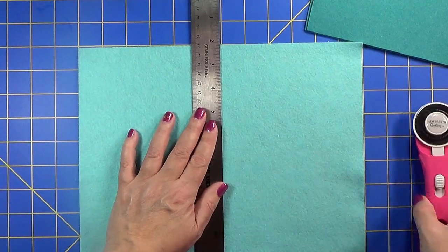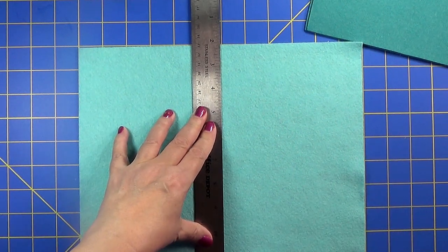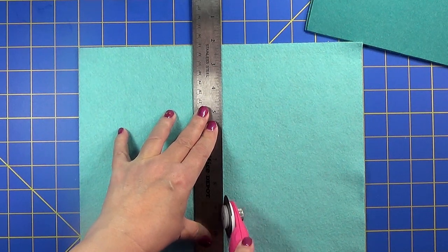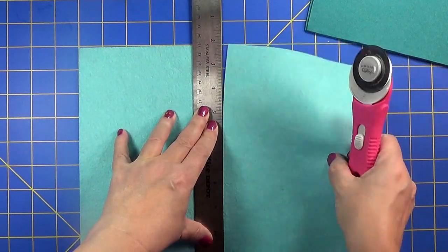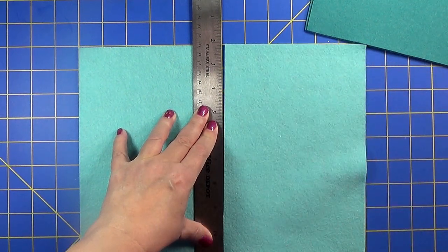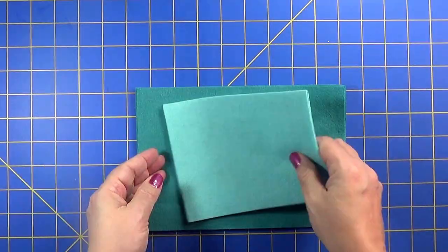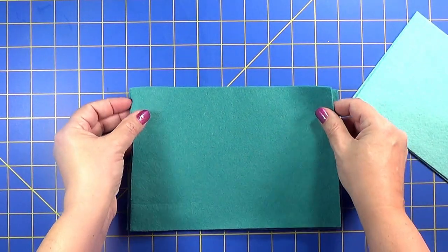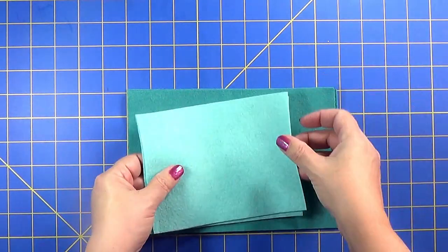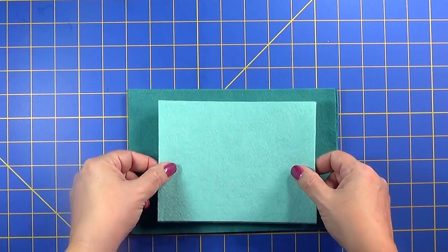Now I'm going to make some inside pages. I'm going to start with a half a sheet of felt. Make sure it's lined up here. So I have my outside cover, which is this teal, and then my inside pages are going to be this light blue, kind of a light aqua color.